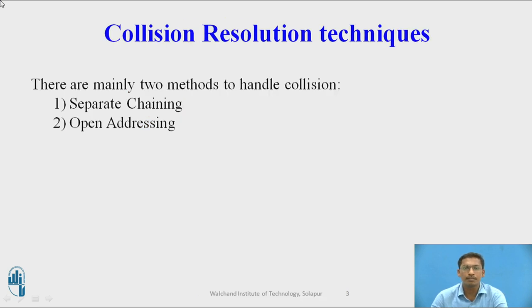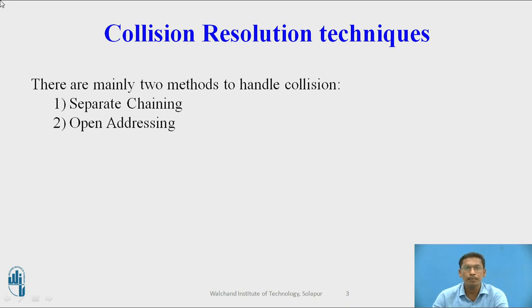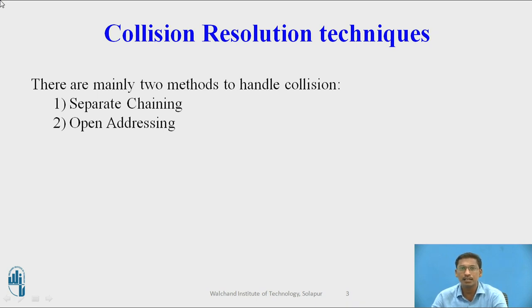There are two collision resolution techniques broadly classified as separate chaining and open addressing. Collision occurs when two input values produce the same hash key by the hash function. So if a value is already present at a particular slot, we cannot insert the next value at that slot — in that case we say collision occurs. For handling this collision situation, the two broadly classified methods are separate chaining and open addressing.